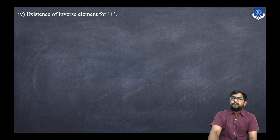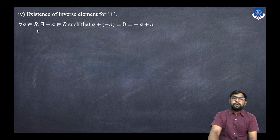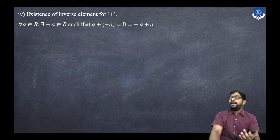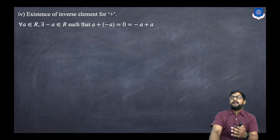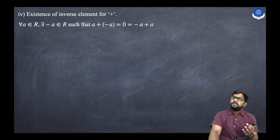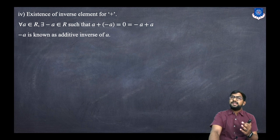The fourth property is existence of inverse: for every A belonging to R, there exists −A such that their addition gives the identity element. So −A is known as the additive inverse of A.